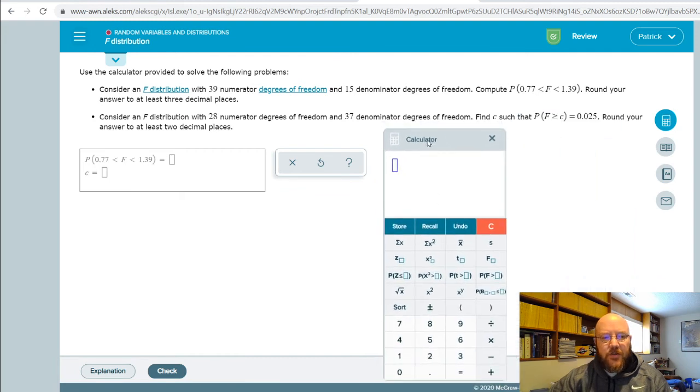Or between two values, the probability of finding the f value between these two cutoffs right here. And so to do these, you just subtract this first one from the second one, and you do that by punching in the calculator like this.